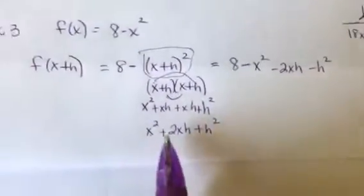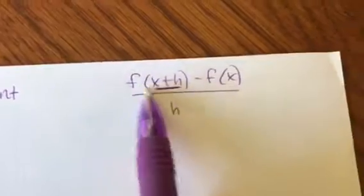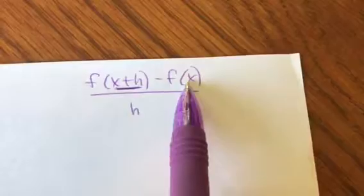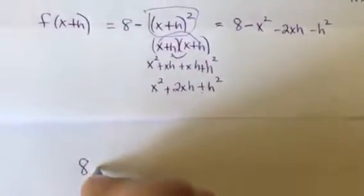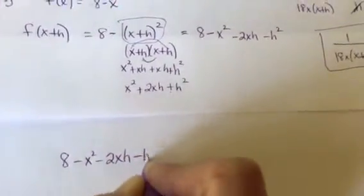So on the difference quotient, remember, I'm going to flip back up here to my original equation. We're going to take what we just found and subtract the original function. So I'm going to take, here's what I just found, 8 minus x squared minus 2xh minus h squared. I'm going to subtract my original function.